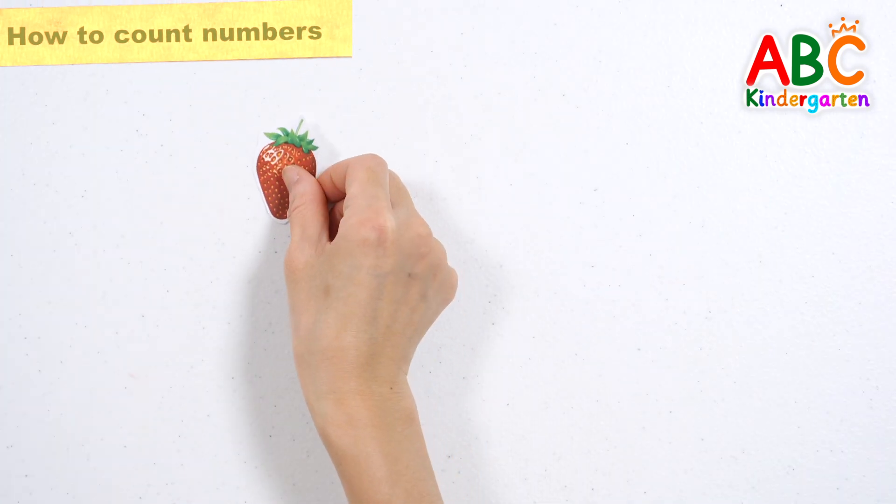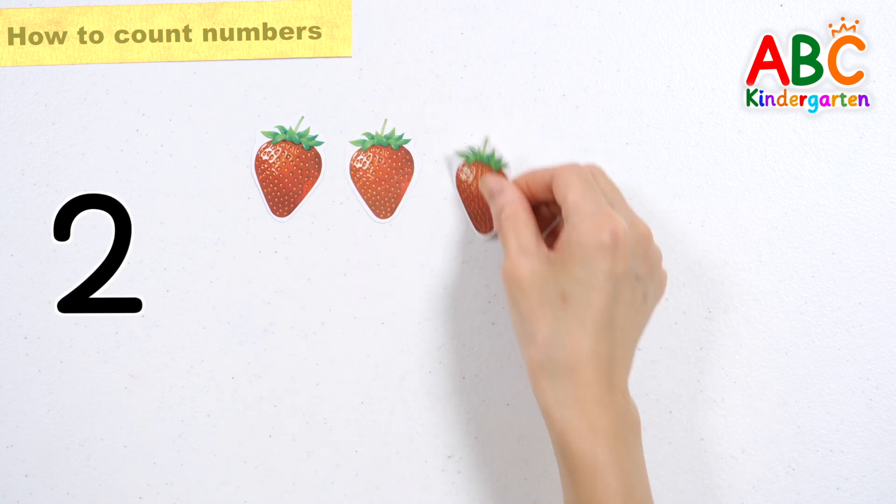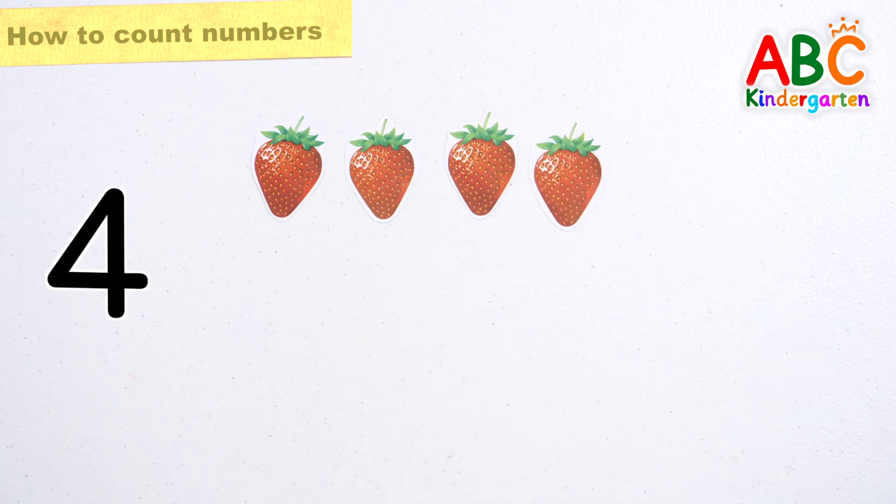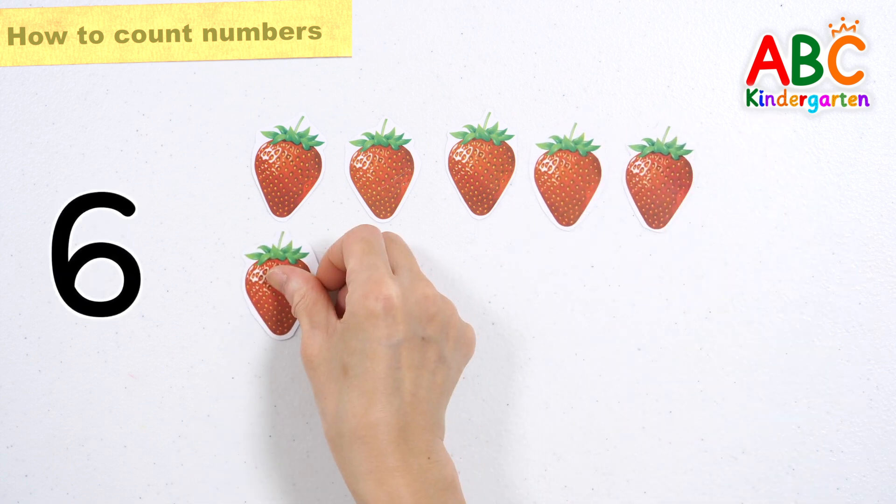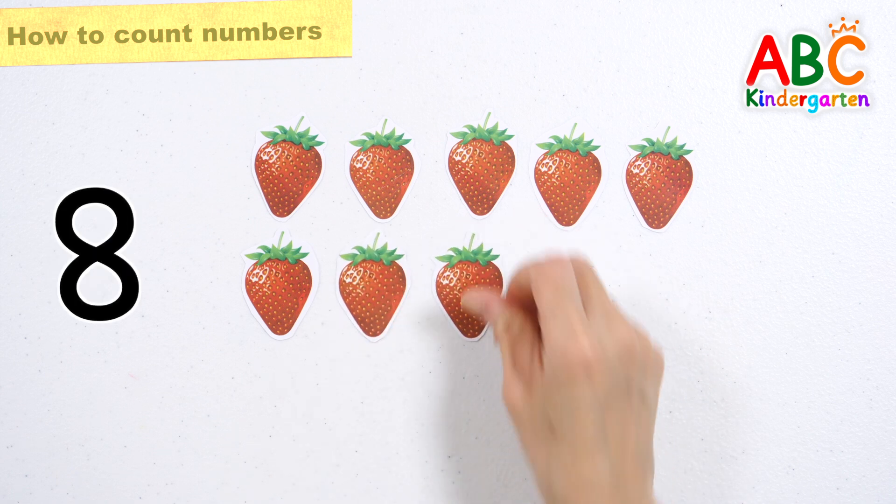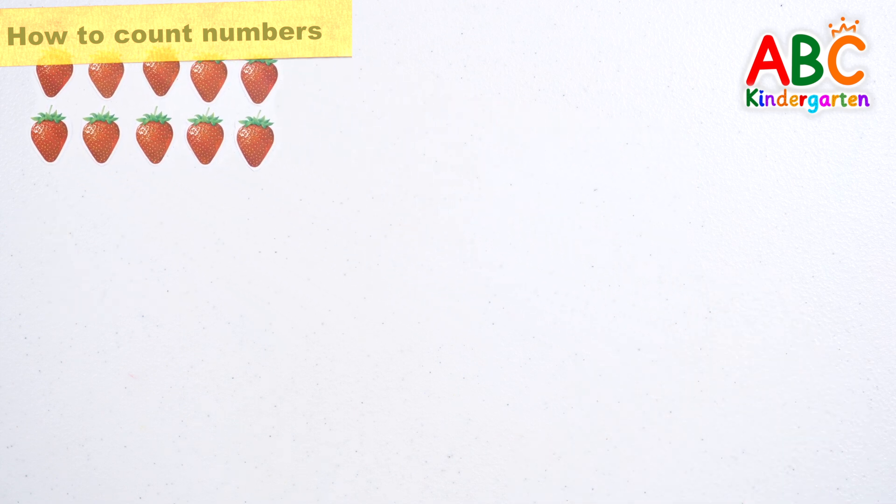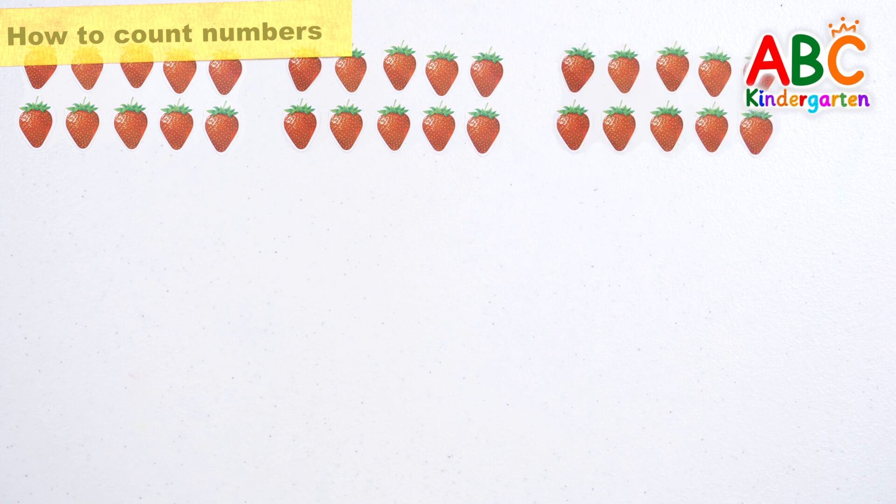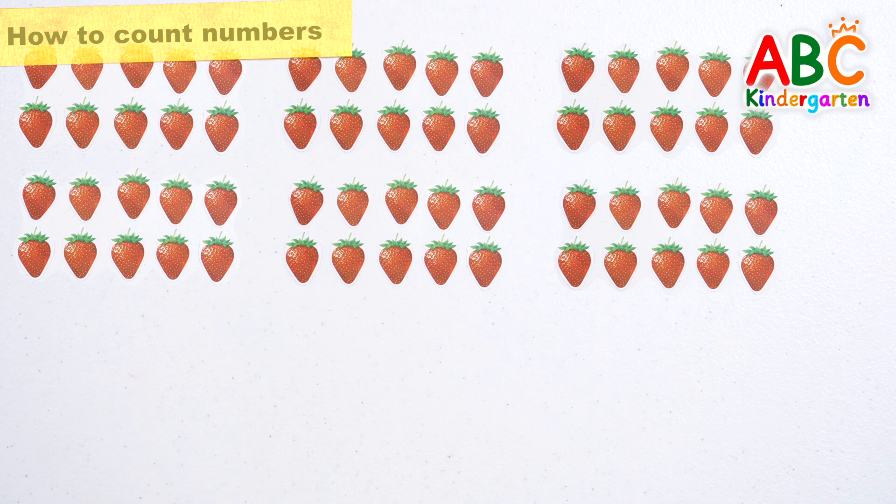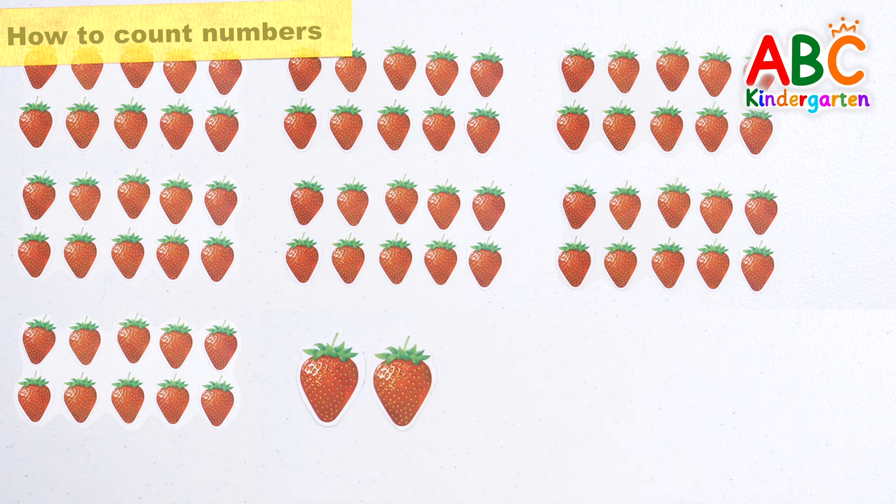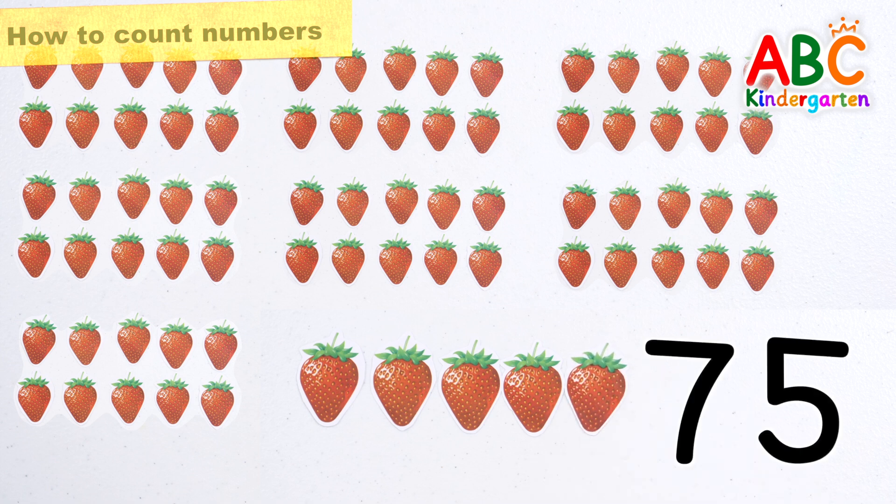Good job! Learn how to count with strawberries. 1, 2, 3, 4, 5, 6, 7, 8, 9, 10. 10 strawberries. 10 is 1, 2, 3, 4, 5, 6, 7, all 70. And strawberries 1, 2, 3, 4, 5. There are 75 strawberries in total. Great job!